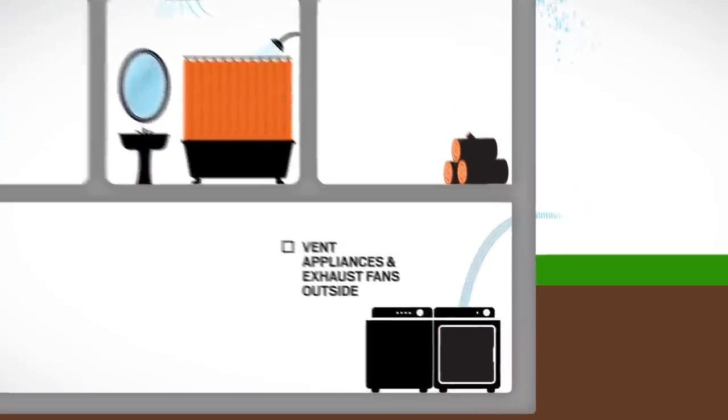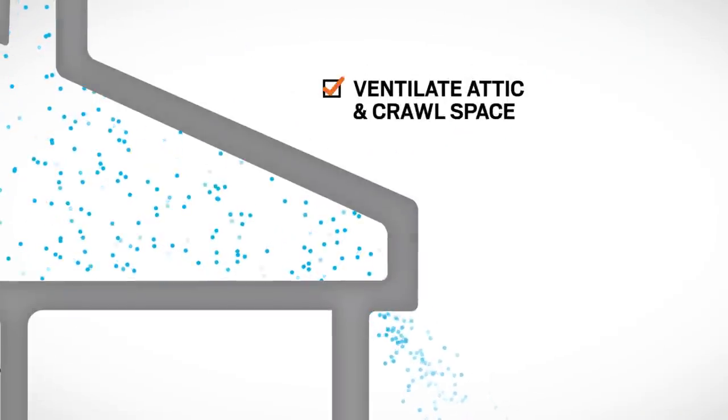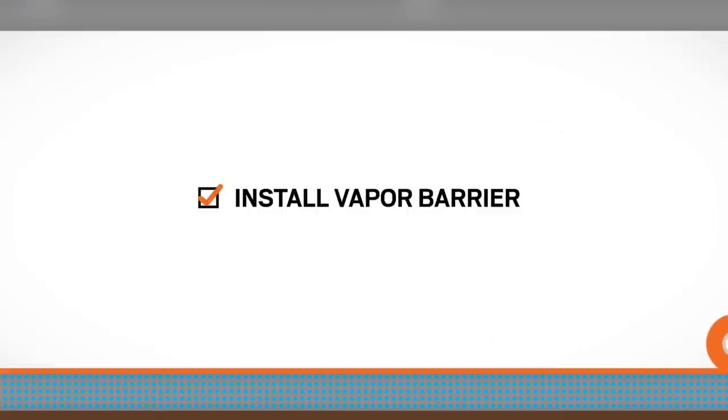To help reduce humidity in your home, vent all gas appliances, clothes dryers, and exhaust fans to the outside. Ventilate your attic and crawl space. Cover the earth in the crawl space with a good vapor barrier.